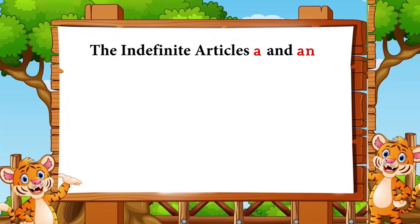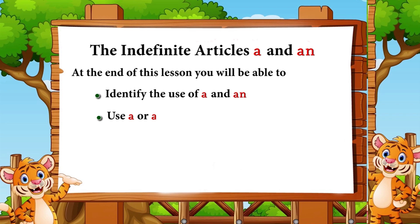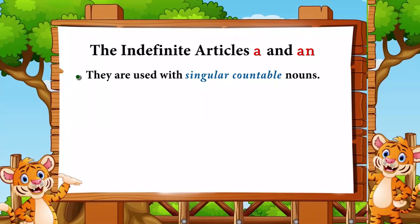Hi students! Today you're going to learn about the indefinite articles 'a' and 'an'. At the end of this lesson, you will be able to identify the use of 'a' and 'an', and use 'a' or 'an' correctly before words. They are used with singular countable nouns. Example: 'I have a pen.' Pen is singular and also a countable noun, so we use 'a'.